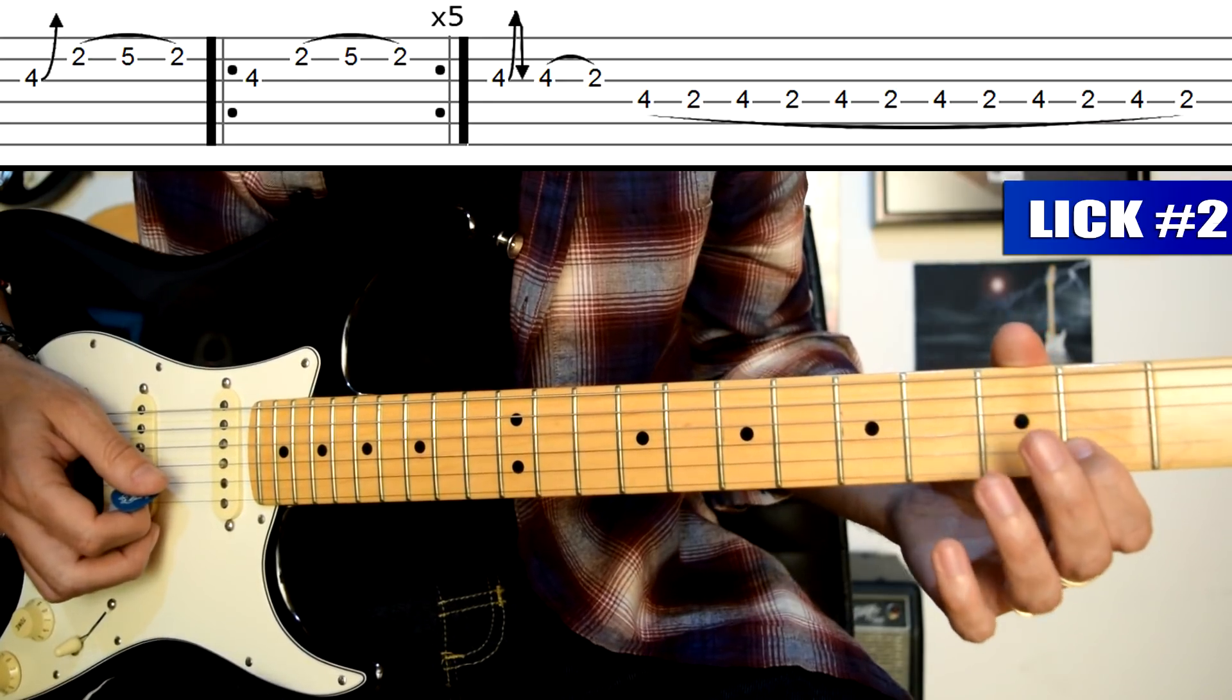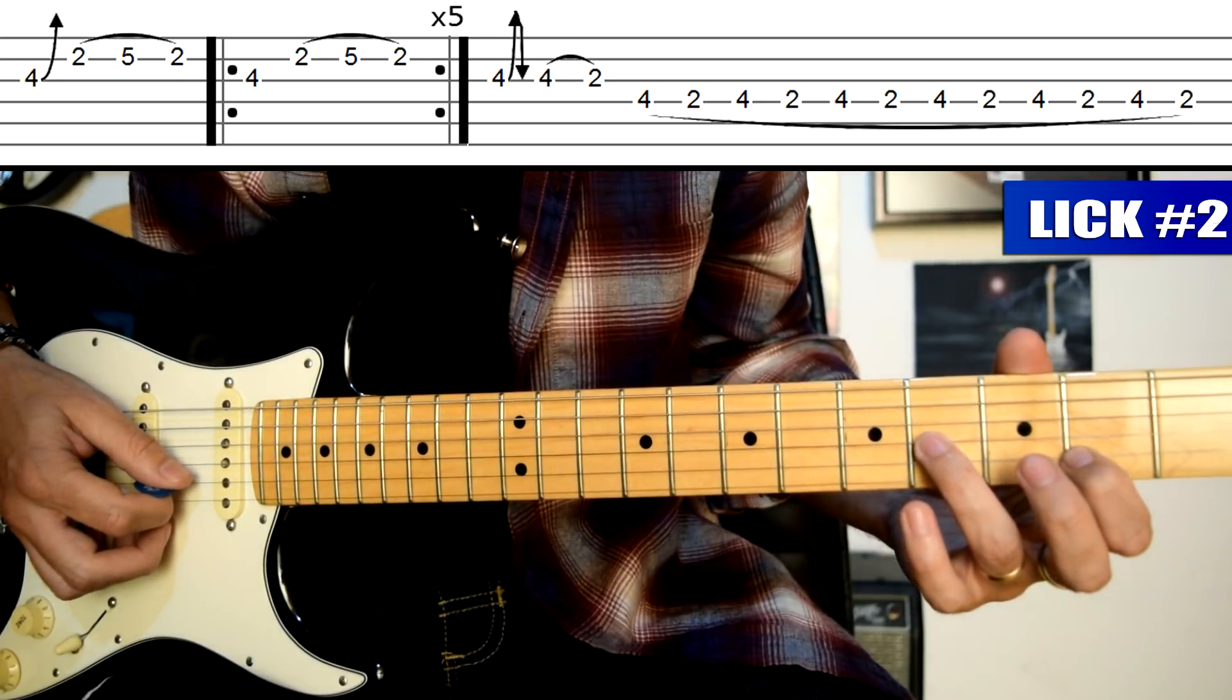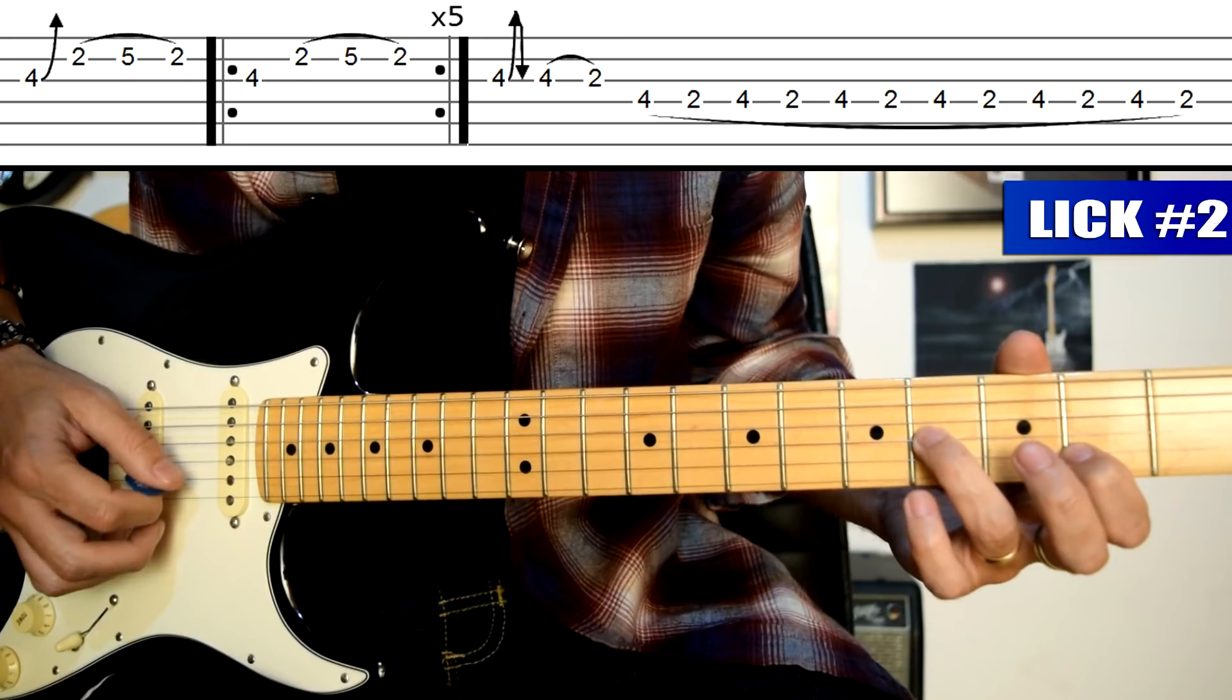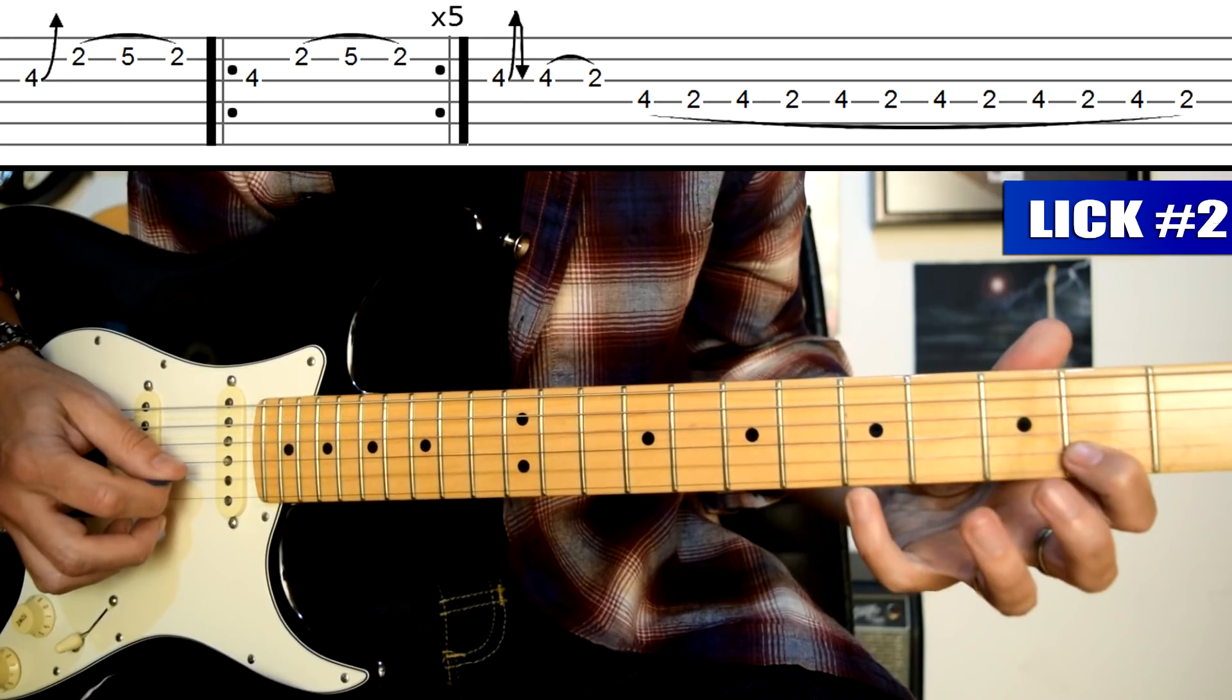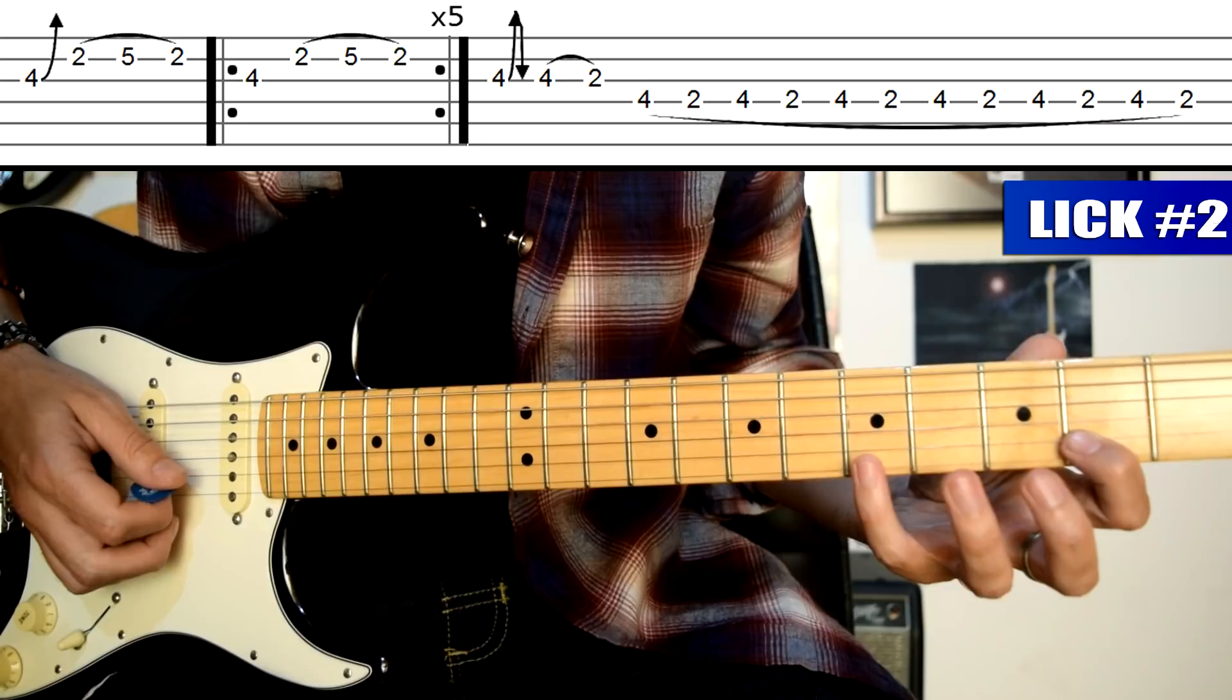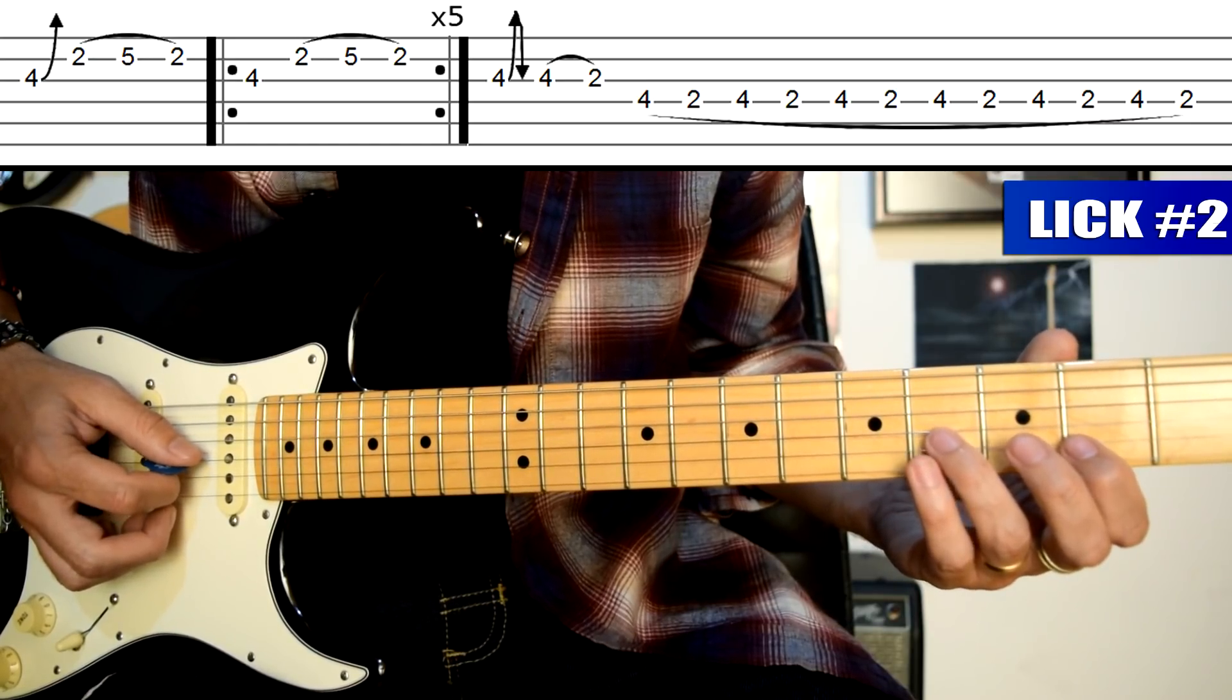Y ahora siempre dejando anclado el dedo 1 en el traste 2 de cuerda 2, voy a llevar el dedo 3 nuevamente al traste 4 de cuerda 3, púa abajo en cuerda 3. Levanto el dedo 3 y ahora hago lo mismo: púa arriba en cuerda 2, y hago el ligado pegando y quitando en el traste 5 de la cuerda 2 con el dedo 4.